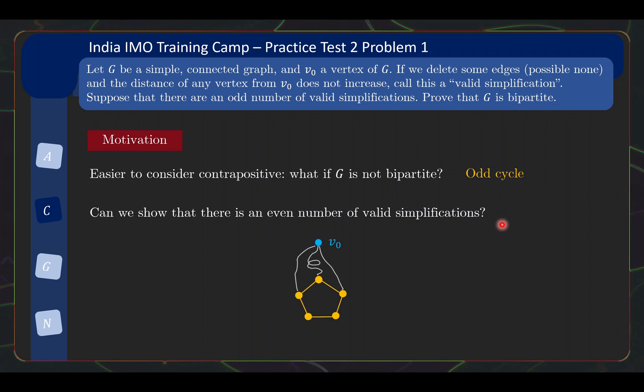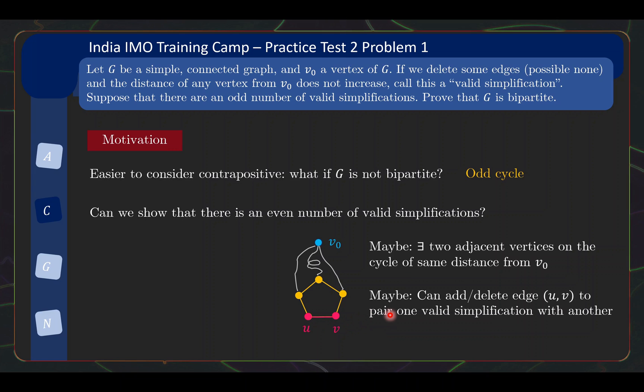So let's think about our vertex V0 and we have the odd cycle. The odd cycle might be connected to V0 through some complicated ways that we don't know. But what inspiration can we have from here? Well, after drawing a few diagrams, you might be tempted to hypothesize that maybe there are two adjacent vertices on the odd cycle that are of the same distance from V0. And maybe we can add or delete this edge to pair up one valid simplification with another. Meaning if your valid simplification has UV already deleted, maybe we can not delete it and still have a valid simplification. Conversely, if your valid simplification did not delete UV, maybe you can delete it and still get a valid simplification. So the whole crux of the proof then is just to prove these two maybe statements rigorously.